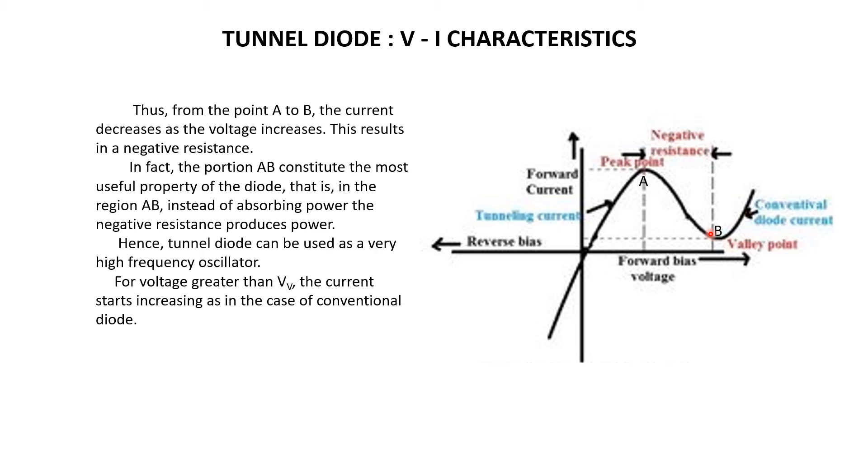In that case, V equals IR and R is positive resistance. But here, as the voltage increases, the current decreases. Hence, this region is said to be negative resistance region, and this is the useful property and interesting property of the tunnel diode.